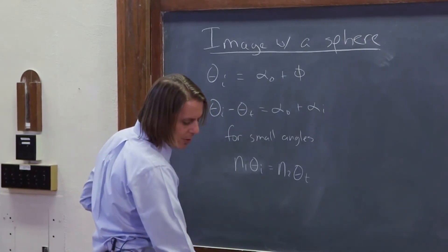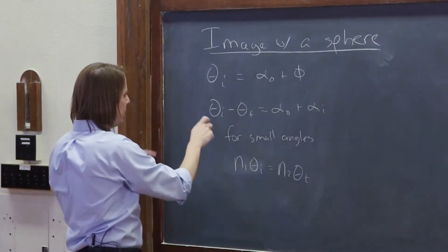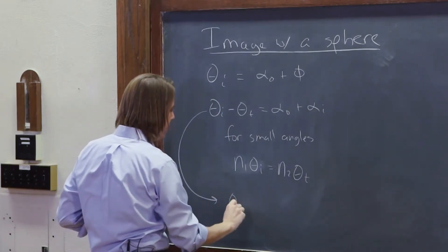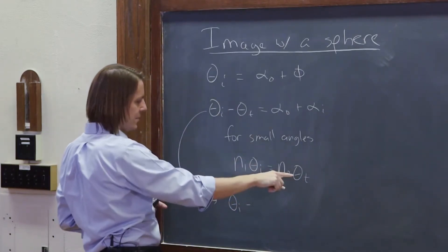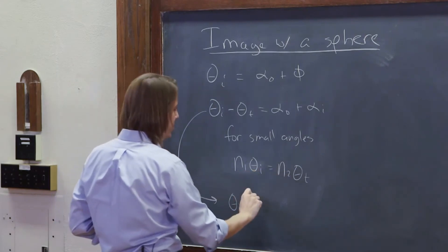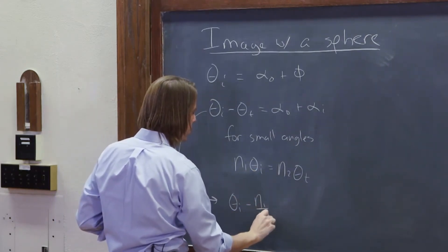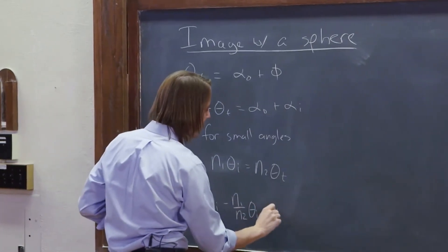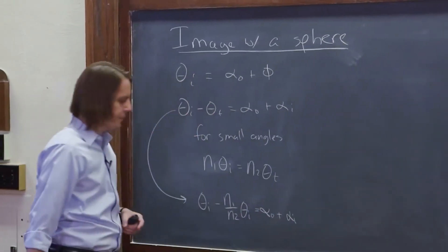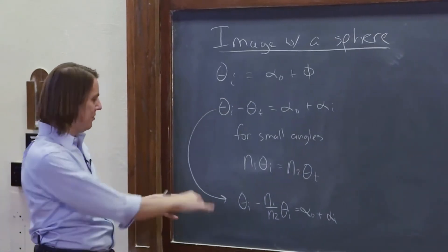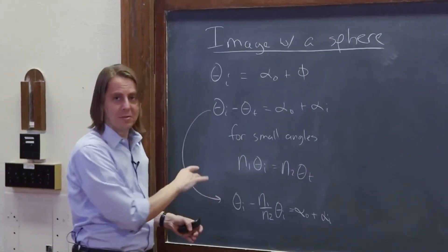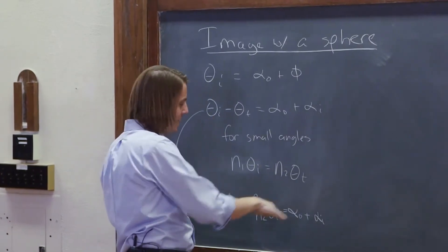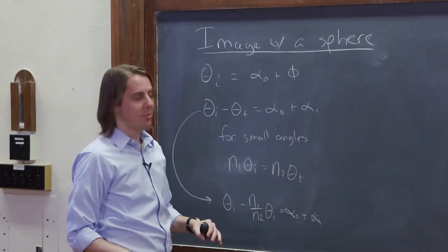And now all we're going to do is rewrite this equation and we're going to substitute for theta t. So we're going to say theta i minus, so theta t must be N1 over N2 theta i equals alpha naught plus alpha i. So now we have, well, we've gotten rid of one angle, right? Now we have it down to, if you come in at this thing at some alpha i, this is what happens.